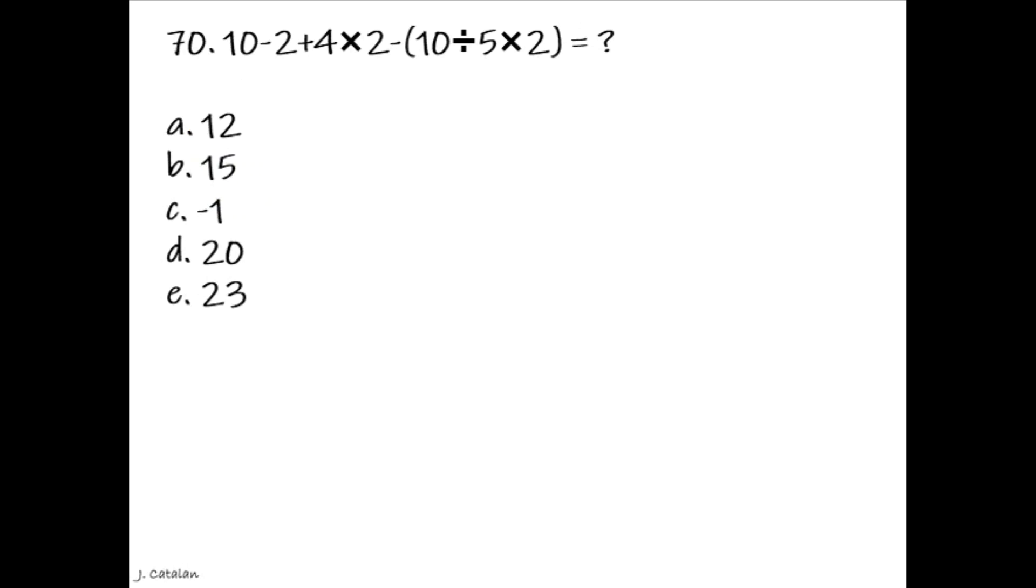Question 70: 10 - 2 + 4 × 2 - (10 ÷ 5 × 2) equals? Answer: 12.